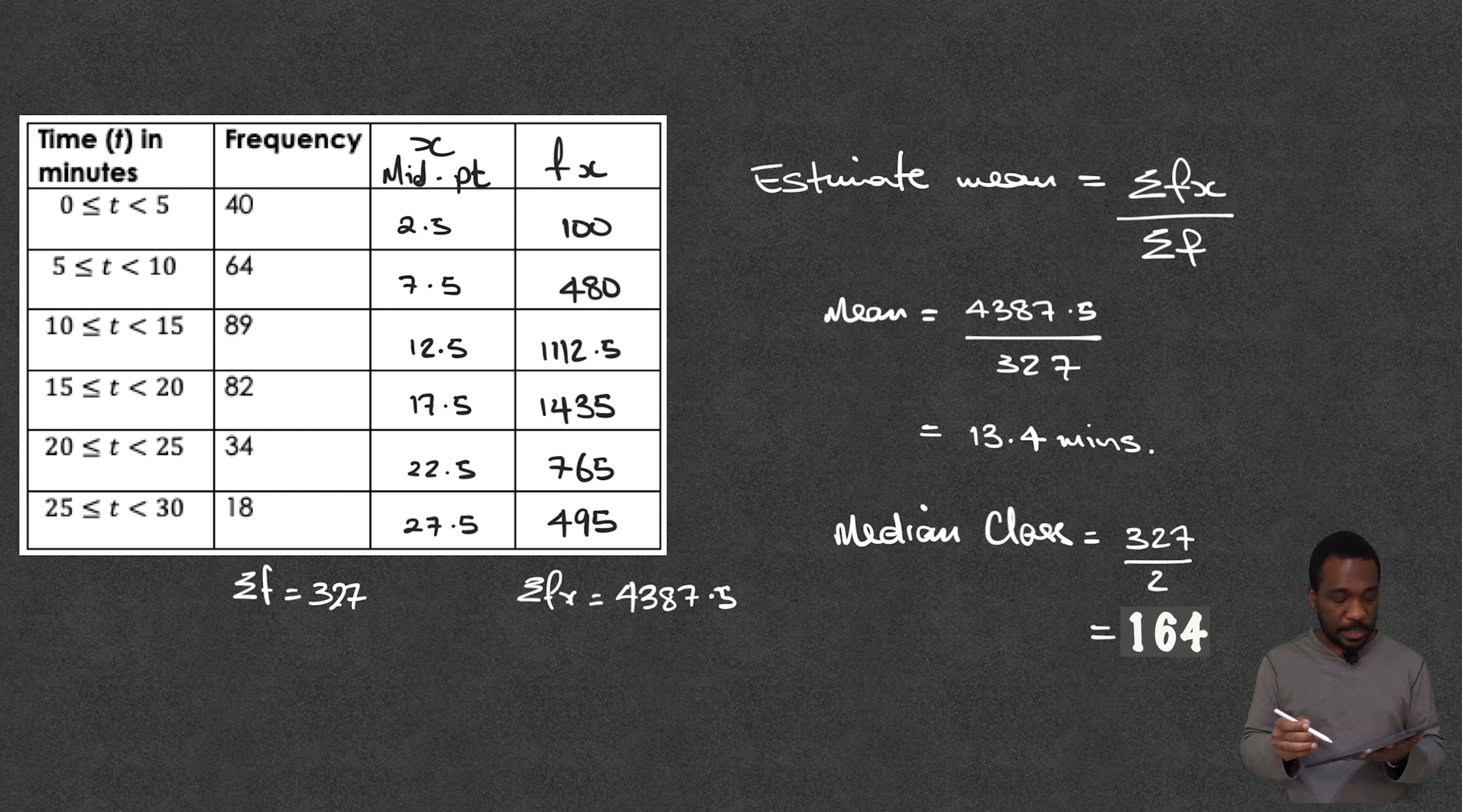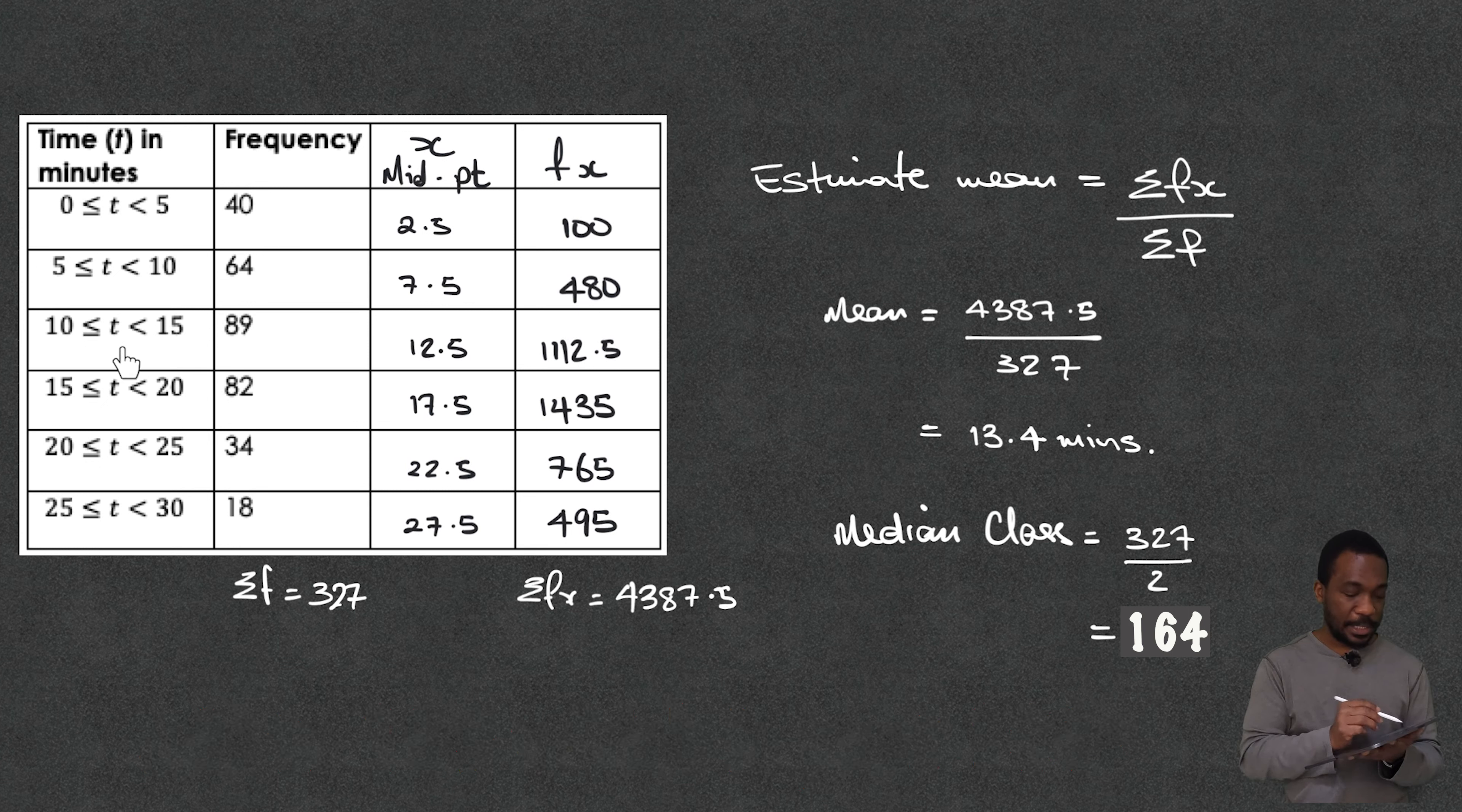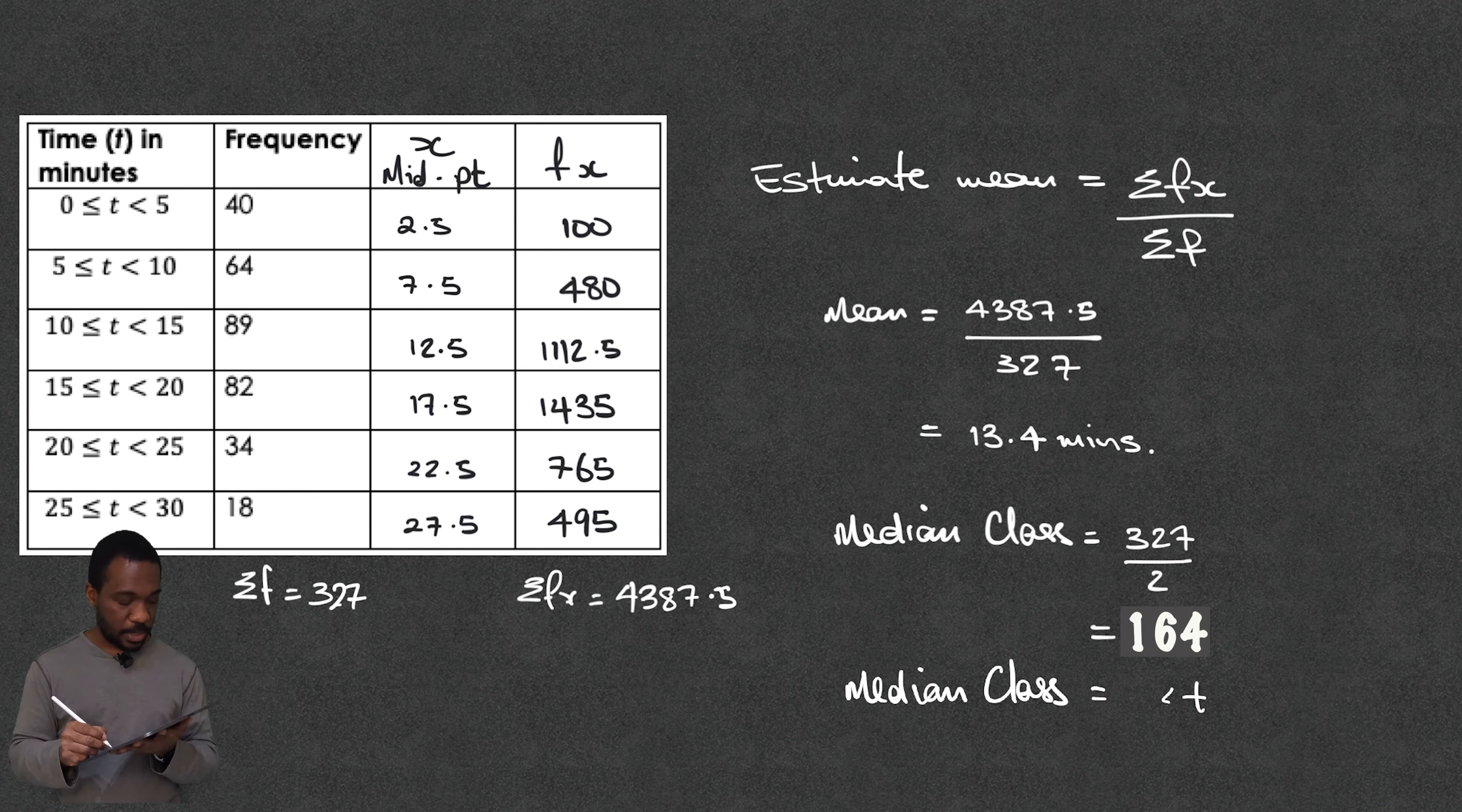Well let's go down here. That's 40 and then if I add 64 to that that's 104 but if I then add 89 to that I will go past 193. So it tells me that my median is in there.